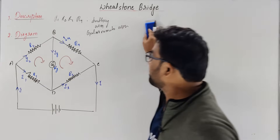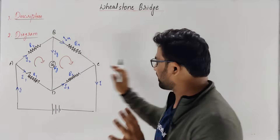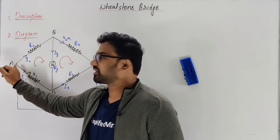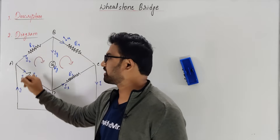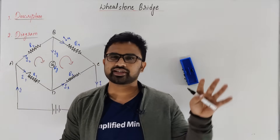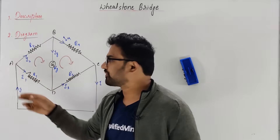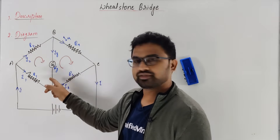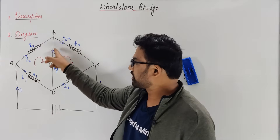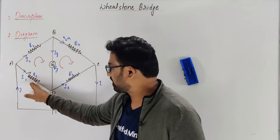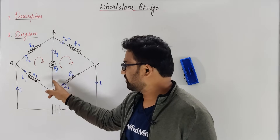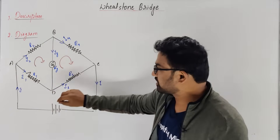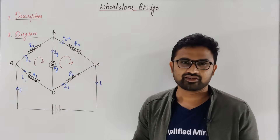After writing the description, directly come to the diagram. Current is obviously split into two ways: I1 and I2. Then I2 further splits — I4 goes one way and IG flows through the galvanometer. I4 then comes back and joins. Similarly, I1 comes through, IG flows in, and I3 goes out and comes out as IC. Whatever current goes in must come out.